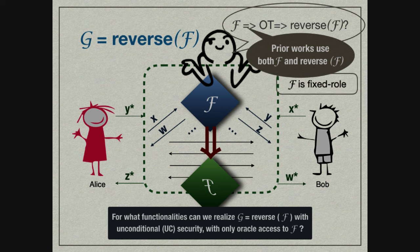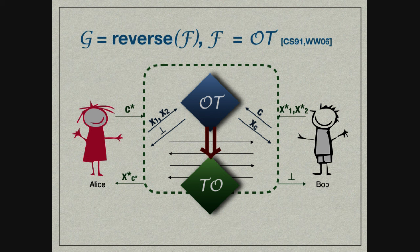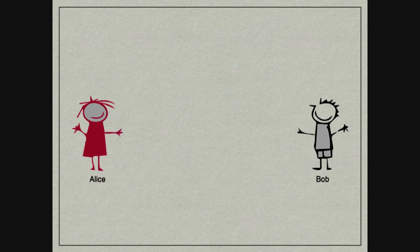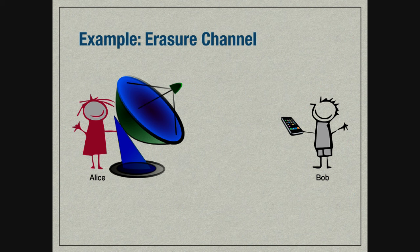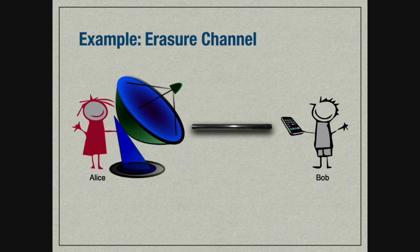For this work, we cannot assume that if parties have access to F, they also have access to reverse of F. We say a functionality is fixed role when the roles of both parties are determined. Having access to F doesn't necessarily mean you can access the reverse of F. This question has been studied for the special case of oblivious transfer. Crepeau and Santha, then Wolf and Wullschleger, showed how to reverse oblivious transfer.